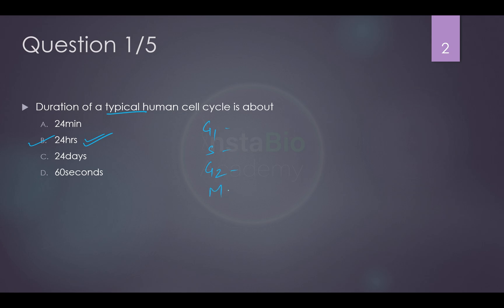So 24 hours can be divided as 11 hours, 8 hours, 4 hours, and just 1 hour. So you can see, G1 is the longest part of the cell cycle and M phase is the shortest. So that's something you can remember by and let's move on to the next question.